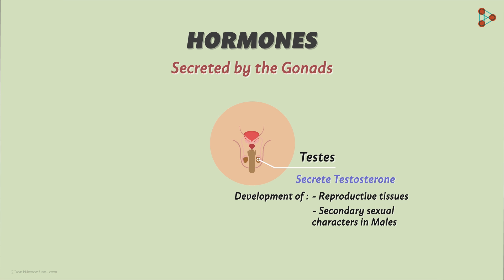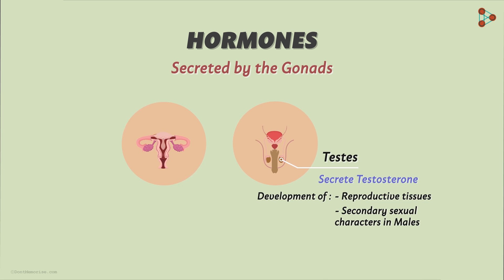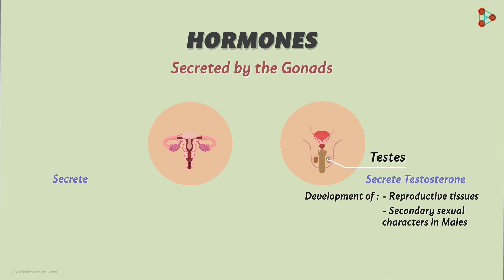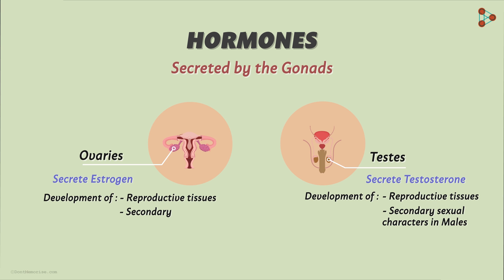And the same is applicable to the female sex hormone called estrogen, secreted by the ovaries. It brings about the development of female reproductive tissues. At the same time, it takes up the responsibility of developing the secondary sexual characters in female individuals.